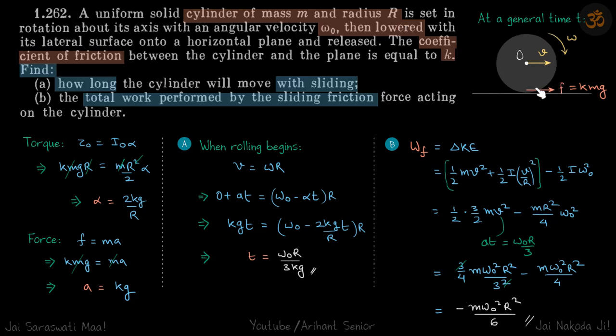We have a rotating cylinder that is lowered on a rough surface. The initial angular velocity is given as omega naught, coefficient of friction is k. We need to find how long the cylinder will move without sliding and the total work performed by sliding friction.